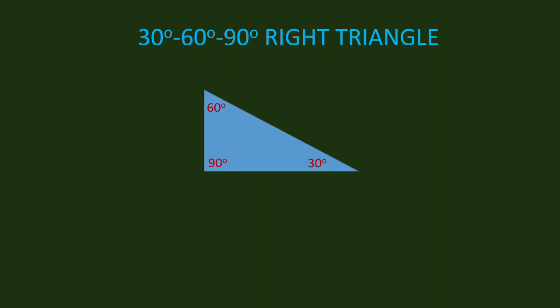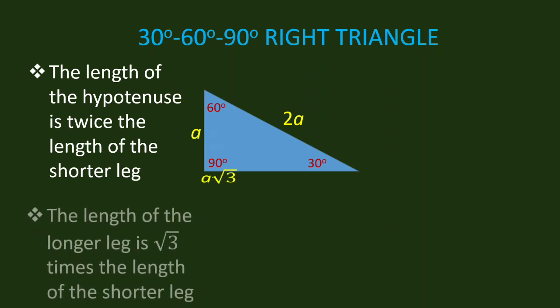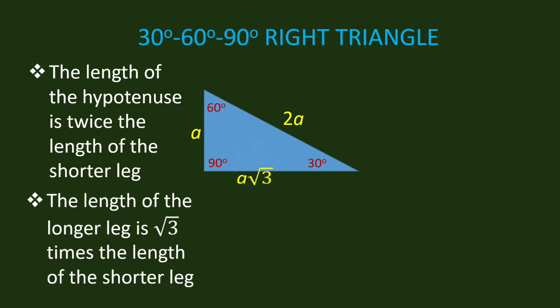In a 30-degree, 60-degree, and 90-degree right triangle, the length of the hypotenuse is equal to twice the length of the shorter leg. So if the shorter leg is A, then the hypotenuse is 2A. The length of the longer leg is square root of 3 times the shorter leg. So if the shorter leg is A, then the longer leg is A times square root of 3.